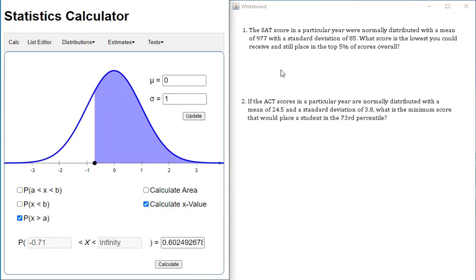So the first question says, the SAT score in a particular year, those scores were normally distributed with a mean of 977 and a standard deviation of 85. So we're not using a standard normal distribution. And it's a good idea just to go ahead and change those input values. So 977, if I hit update, when you change these, you do need to hit this update button. That's the center value of the distribution, 977. So the mean is centered in the middle of the distribution. The standard deviation is 85. If you change that value to 85 and hit update, then what's going to happen is these tick marks adjacent to the 977 are no longer going to be counting in increments of 1. They'll be counting in increments of 85, which is that standard deviation.